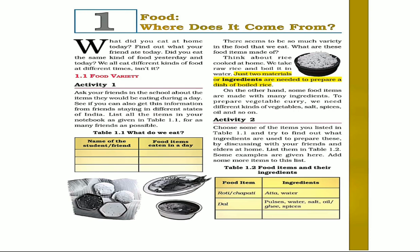We also have spices and food from plants. We have chili powder, coriander powder, and turmeric powder — these are all plant products.